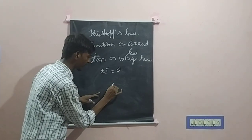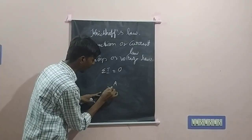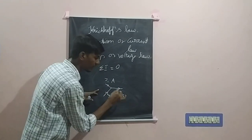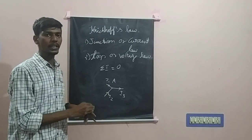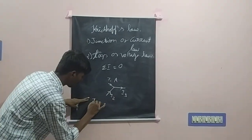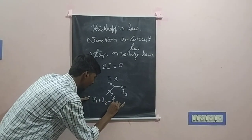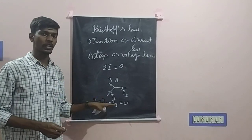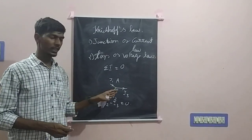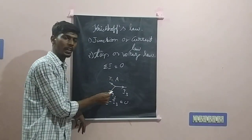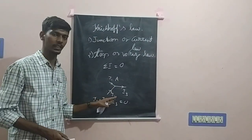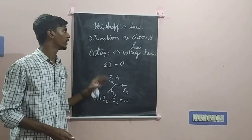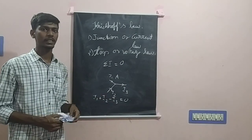For example, if we consider junction A and currents i1, i2, and i3 at this junction, then the total sum will be equal to 0. So, i1 plus i2 minus i3 will be equal to 0. The current is positive or negative based on its direction. Currents i1 and i2 are positive because they are moving towards the junction, whereas current i3 is negative because it is moving away from the junction. This law is also called the conservation of electric charge.